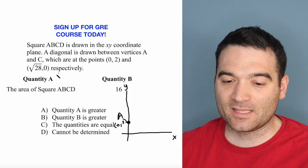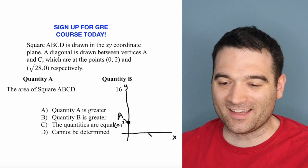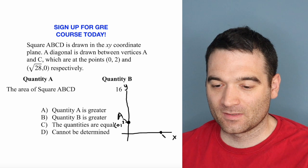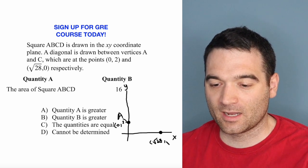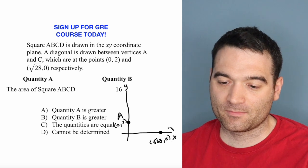And the point C is at (√28, 0). So right there. And I'll write this in. Square root of 28, 0. And that's point C.